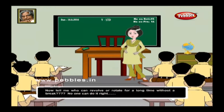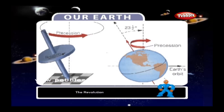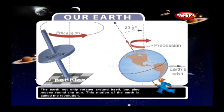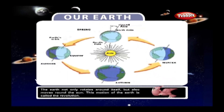No one can revolve or rotate for a long time without a break, but isn't it amazing to know that our Earth revolves and rotates at the same time? Now let us find how it revolves. The Earth not only rotates around itself, but also moves around the Sun. This motion of the Earth is called the revolution.